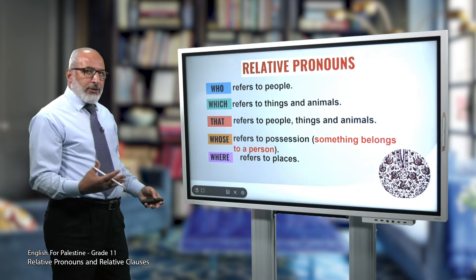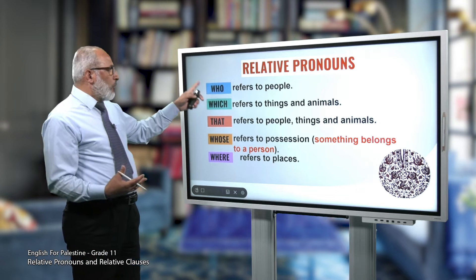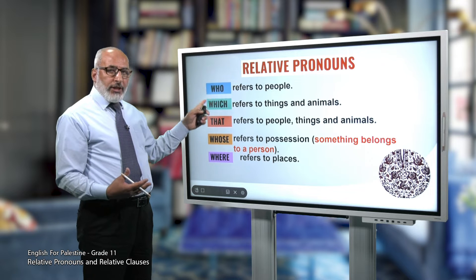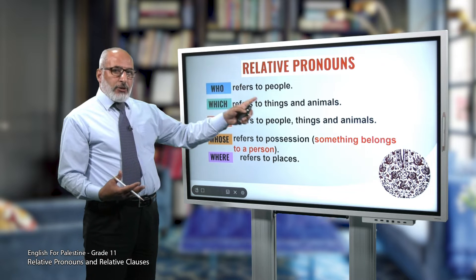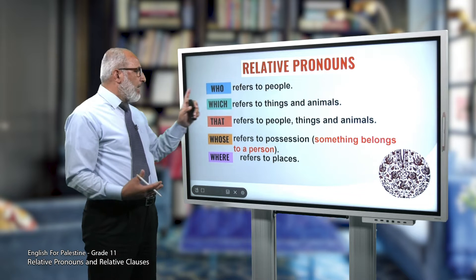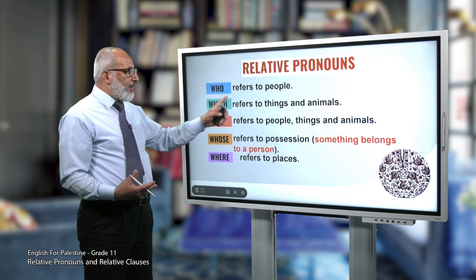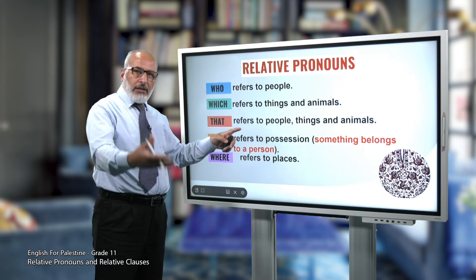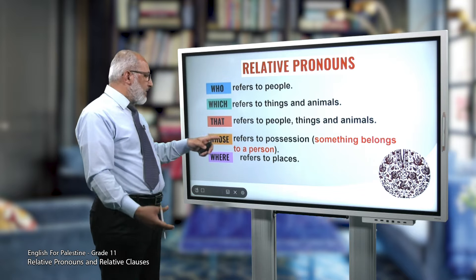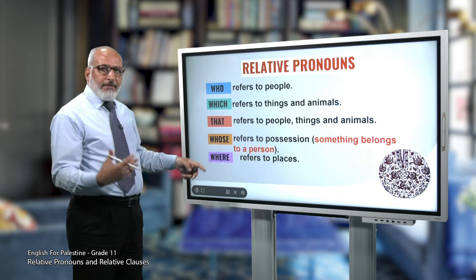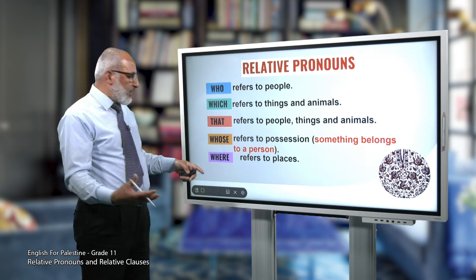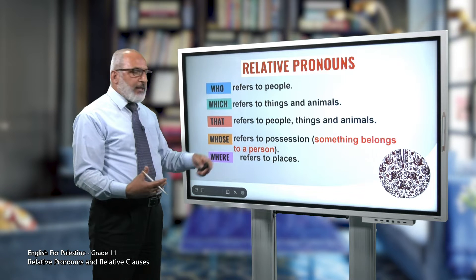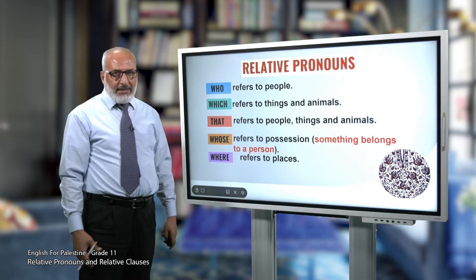'Whose' is used to indicate possession — it means something belongs to a person. And 'where' refers to places. So to summarize: who refers to people, which refers to things or animals, that refers to people, things, or animals, whose indicates possession, and where refers to places.